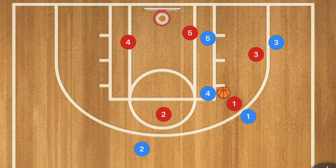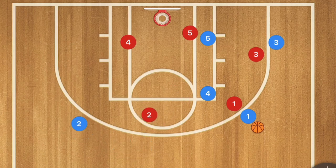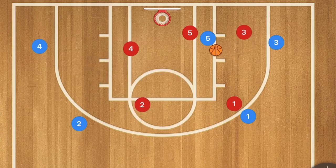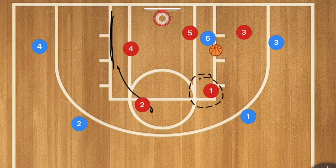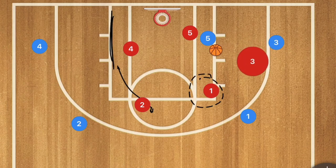Meanwhile there is a player open on the weak side, which could hurt you — but we're focusing on how to defend with the 3-2, not how to beat it. If the ball goes down to the post, player 1 will move down watching the high post, player 2 watches the weak-side cut, as does player 4. Player 3 can either come down to double team or sit up top — many coaches will have him watching both perimeter players.